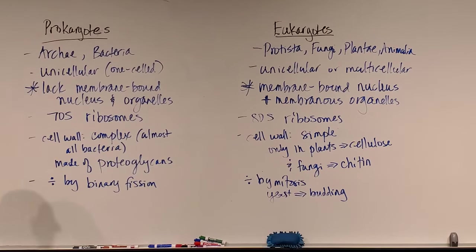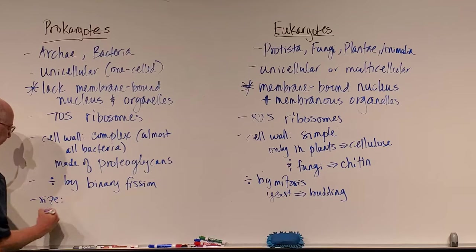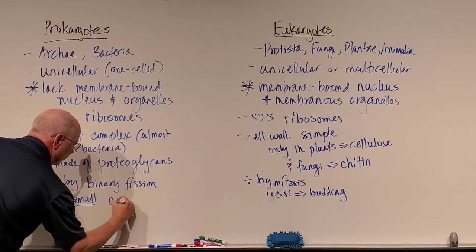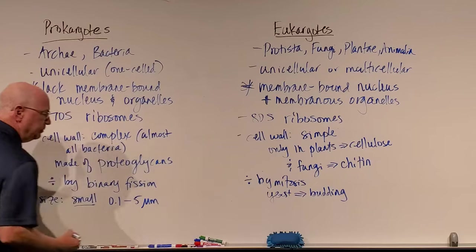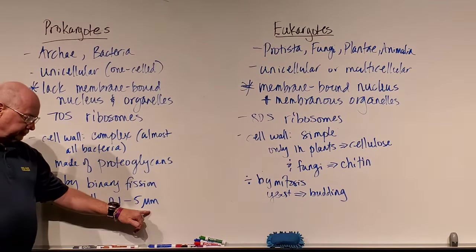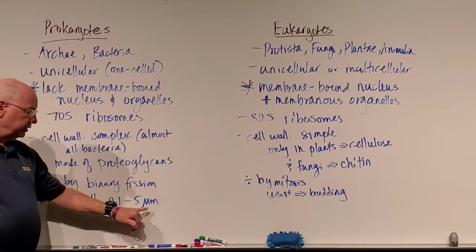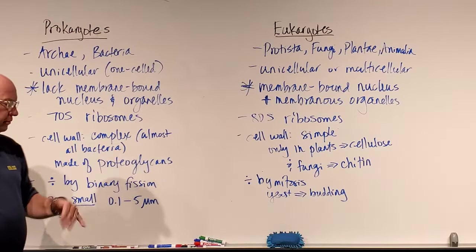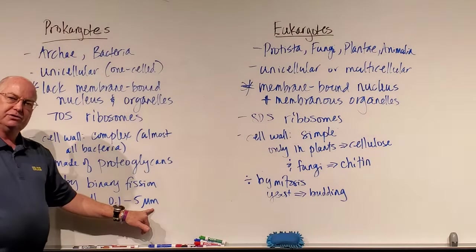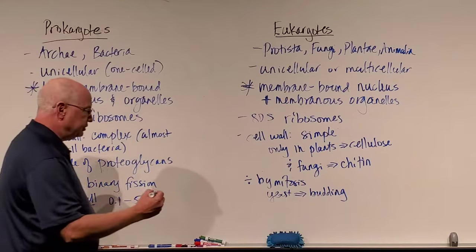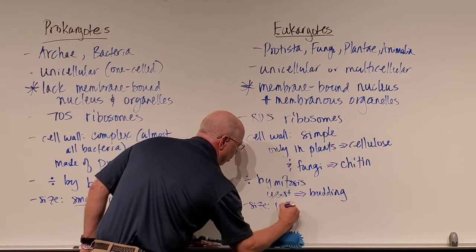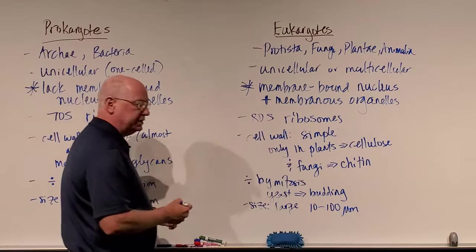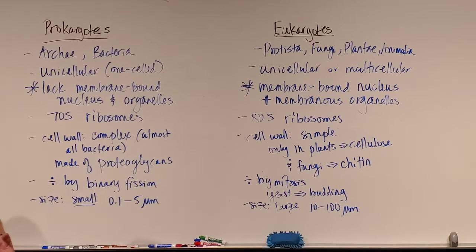Finally, we can talk about size. Prokaryotes are extremely small — about 0.1 to 5 microns. A micrometer is one millionth of a meter. Eukaryotes are rather large compared to prokaryotes, ranging anywhere from 10 to 100 microns in size. The symbol for microns is mu (μ).